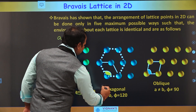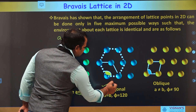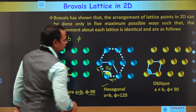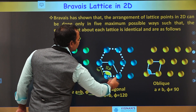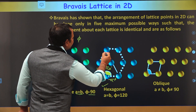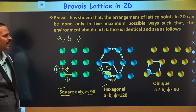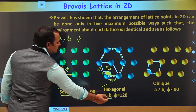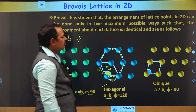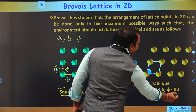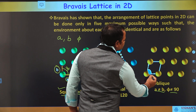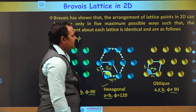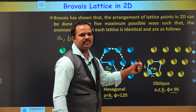The other possible way is hexagonal. In the hexagonal lattice, the distance in one direction is A and in the other is B, with the angle between them being 120 degrees. When we connect the lattice points, we can see a clear hexagon. So the hexagonal way has A equal to B and phi equal to 120 degrees. The third possibility is oblique, where A is not equal to B and phi is not equal to 90 degrees. This is another way to arrange lattice points in two-dimensional space.